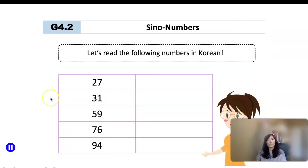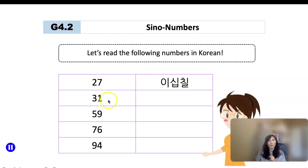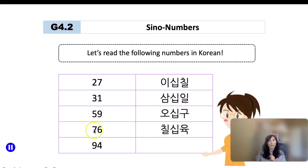Let's practice reading the following numbers in Korean. How do you say 27? Think about 20, which is 이십, then add 7, so 이십칠. 31 is 삼십일. 59: 50 is 오십, add 9, so 오십구. 76 is 칠십육. 94 is 구십사. So far so good?